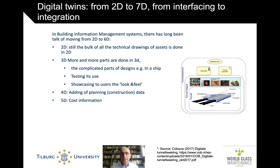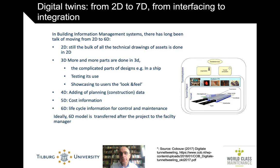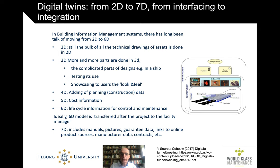4D means adding construction data, 5D means adding cost information, 6D means adding lifecycle information such as maintenance. The idea is that you use all this to design the object — in this case, a tunnel. And then you transfer it after it's designed and completed to the facility manager. I've already seen in practice that often doesn't happen because the facility manager is a different company and it's not paid for. Many non-technical reasons why it's not being used. But you could add manual pictures, guaranteed data, links to online project sources. This is from COBAU, a Dutch organization focusing on underground building.